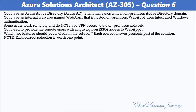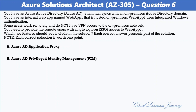Question number six: You have an Azure Active Directory tenant that syncs with an on-premises Active Directory domain. You have an internal web app named webapp1 that is hosted on-premises. Webapp1 uses integrated Windows authentication. Some users work remotely and do not have VPN access to the on-premises network. You need to provide the remote users with single sign-on access to webapp1. Which two features should you include in the solution? The options are: A) Azure AD Application Proxy; B) Azure AD Privileged Identity Management; C) Conditional Access Policy; D) Azure Arc; E) Azure AD Enterprise Applications; F) Azure Application Gateway.